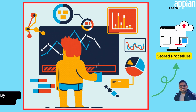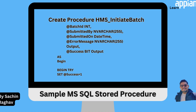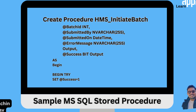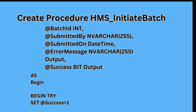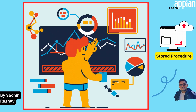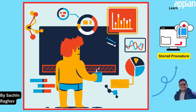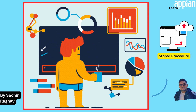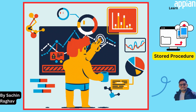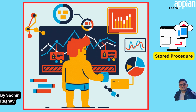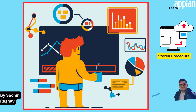Pro tip! Create a stored procedure to manage your data with only essential parameters, like batch ID, submitted by, and submitted on. Don't forget to initialize the updated on field in the main transaction table using submitted on. This is critical for future updates, and I'll explain why in the final part of the video.